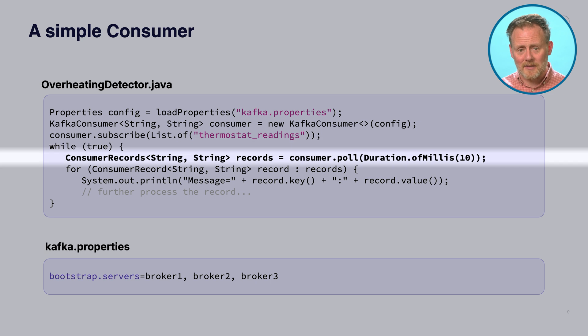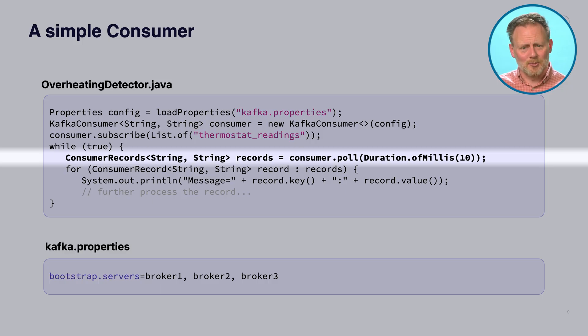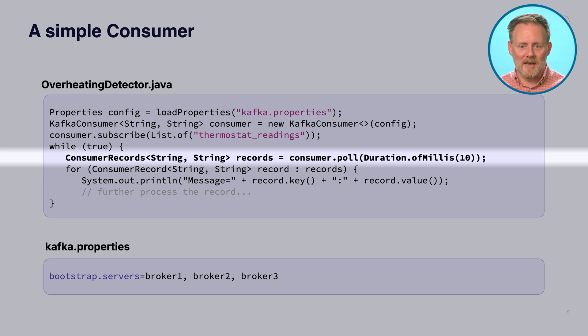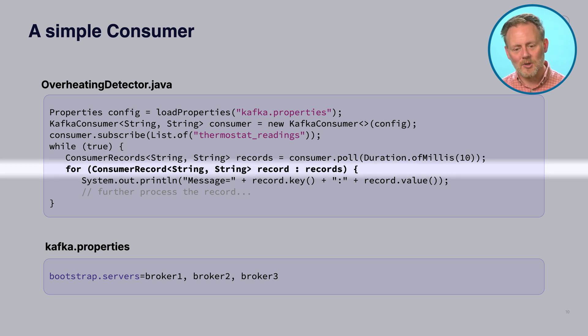We call this poll method that tells the library to go and ask the cluster whether there are any new messages for it to consume. Deep under the hood of the consumer library, that method is aware of which partitions are implicated — which topics are we subscribed to, what partitions does that topic have, where are the leaders, what brokers have the leader partition for each of the partitions in the topic. So this really is asking specific computers in the Kafka cluster, specific processes out there, whether they've got any new messages.